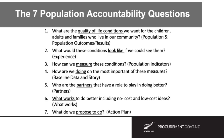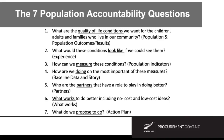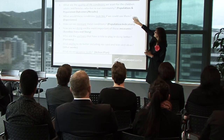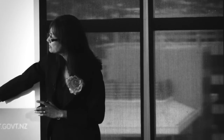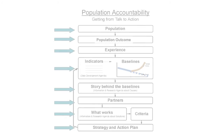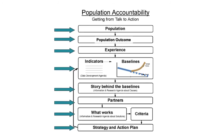So seven questions which take us from ends to means, enabling us to identify not only what the population outcome or result is and how we're going to measure success, but also how we're going to work collaboratively together to achieve improvements at a population level. This is a diagrammatic representation of that. Sometimes we don't know what we don't know, so we create an information and research agenda at different parts of the seven-question application journey. Don't be afraid to say 'I don't know, I need to find out more information' — but keep going, because it's important that we move from ends to means.